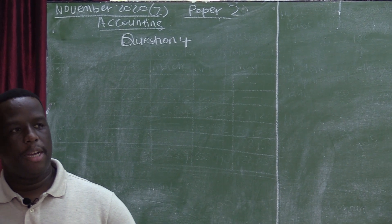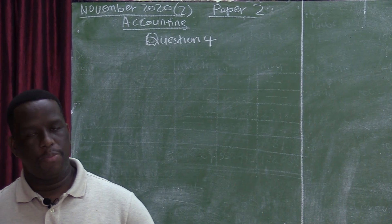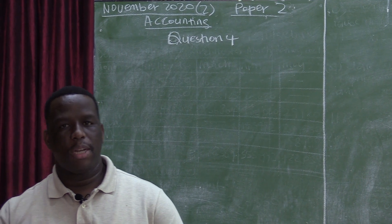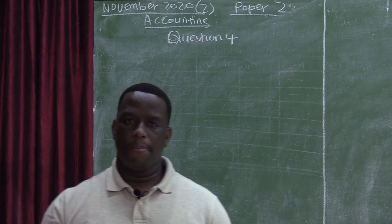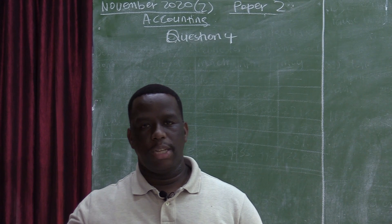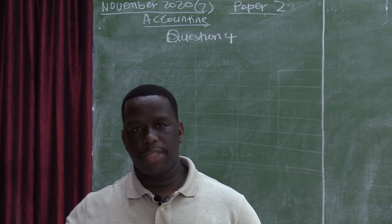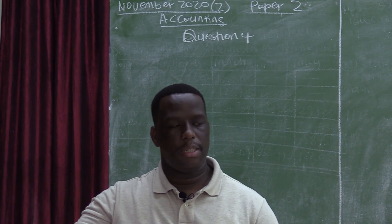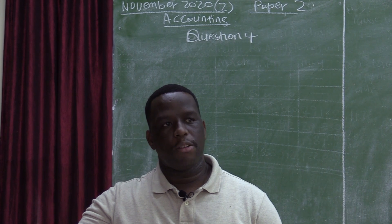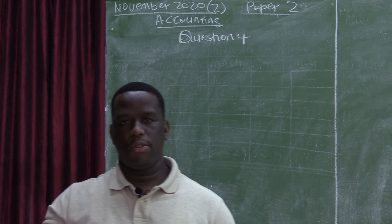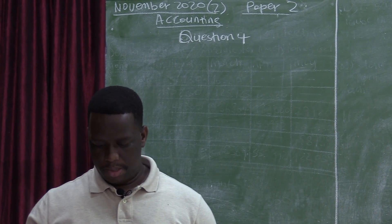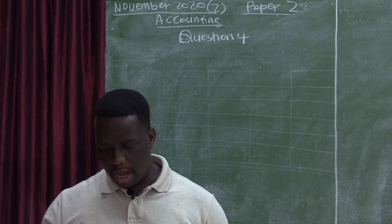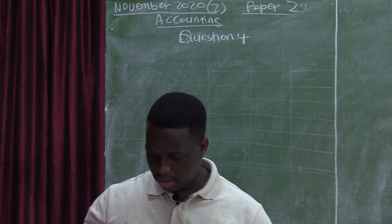The main difference between the two systems is that in the perpetual stock system, cost of sales is calculated at the point of sale, but in the periodic stock system, cost of sales is calculated after a certain period of time. These two stock control systems have got their advantages and disadvantages.